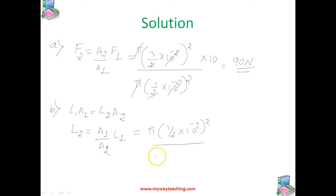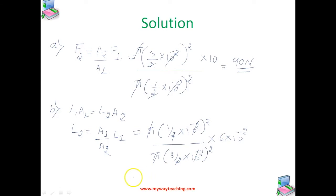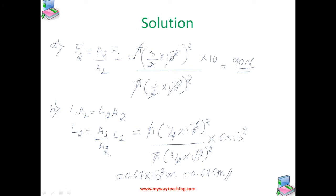The area is given by πR². The diameters are given in the problem. L1 is given as 6 cm, which we write in meters. Substituting and simplifying, we get L2 = 0.67 × 10⁻² m, or equivalently 0.67 cm. Atmospheric pressure is common to both pistons and is ignored. This is a very simple problem, so let us now solve a similar kind of problem.